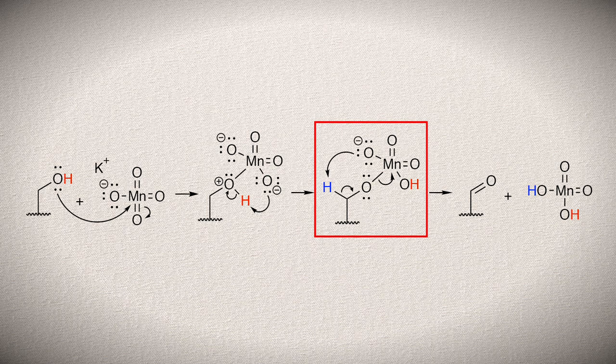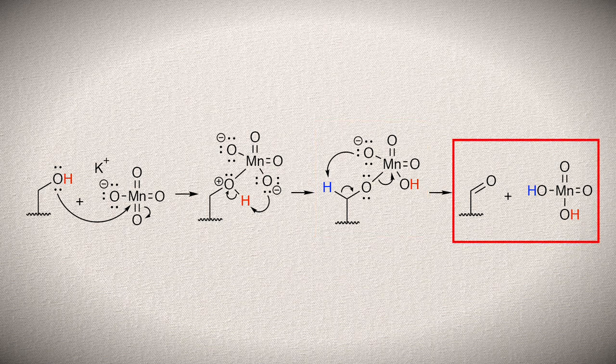The alpha hydrogen is attacked by the negatively charged oxygen associated with the manganese. The electrons that bonded it to the carbon are donated to form a double bond between the carbon and the oxygen. As this double bond forms, the bond between the oxygen and manganese breaks, so oxygen doesn't exceed its octet. What we're left with is an aldehyde and manganic acid.